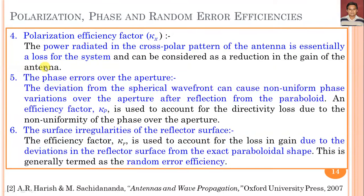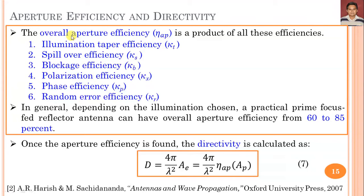The fifth parameter is phase efficiency factor, represented by κ_E, accounting for phase errors over the aperture. Deviations from spherical wavefronts can cause non-uniform phase variation over the aperture after reflection from the paraboloid, also reducing directivity. The sixth parameter is surface irregularities of the reflector surface, which cause gain loss and are measured in terms of random error efficiency, represented by κ_R. The overall aperture efficiency is the product of all six efficiency factors: illumination taper, spillover, blockage, polarization, phase, and random error.